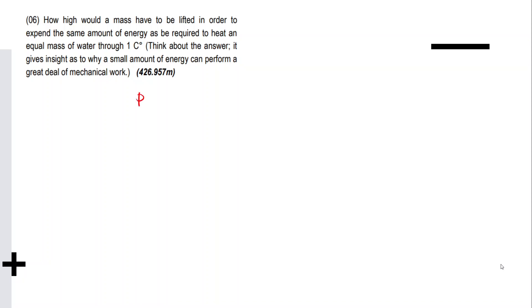So, potential energy — what is its equivalent in heat? Same amount of mass lifted as the water. So, mgh is equal to mc·ΔT for water. Since same mass, we have gh = c·ΔT.